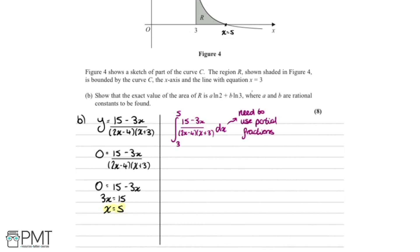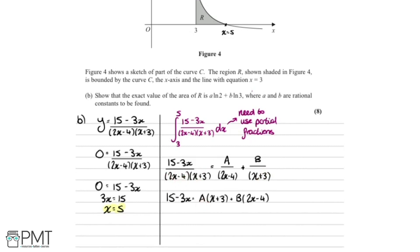To integrate this, we use partial fractions. We write 15 minus 3x, all over 2x minus 4 multiplied by x plus 3, as A over 2x minus 4, plus B over x plus 3. Our job is to work out what A and B are. Multiplying both sides through by the denominator, we get 15 minus 3x equals A multiplied by x plus 3, plus B multiplied by 2x minus 4.